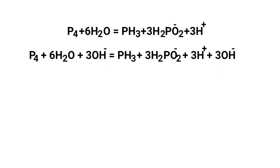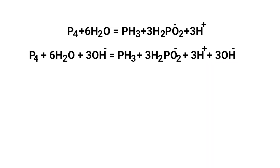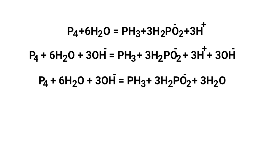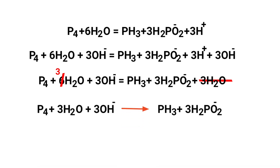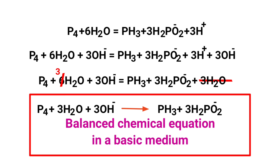Since the reaction is in basic medium, add OH⁻ ions to both sides to keep charge and atoms balanced. Combine the OH⁻ ions and H⁺ ions present on the same side to form water molecules. Then cancel the same terms to obtain the final balanced equation.